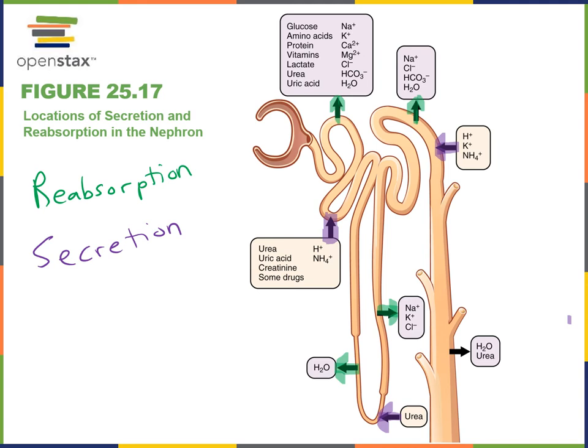Moving through the collecting duct, it provides the final opportunity to concentrate the filtrate and produce the final urine volume. There is variable reabsorption at the collecting duct — just like in the distal convoluted tubule, there is variable reabsorption of water and urea. This enables us to regulate the volume and concentration of the urine produced.